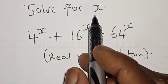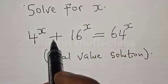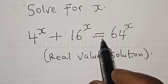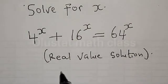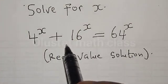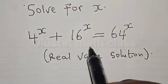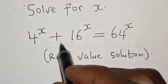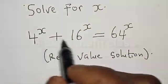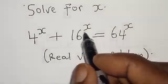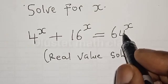For x, 4 raised to power s plus 16 raised to power s is equal to 64 raised to power s. Hi everyone, welcome to my class. In today's class, we want to find the value of s from this given exponential equation: 4 raised to power s plus 16 raised to power s is equal to 64 raised to power s.